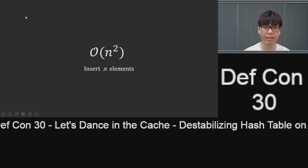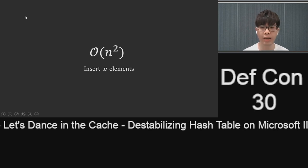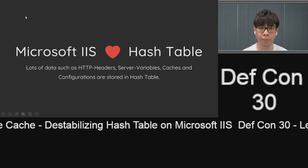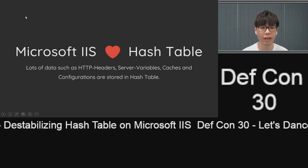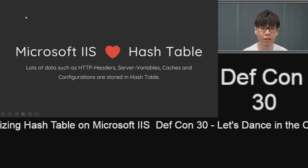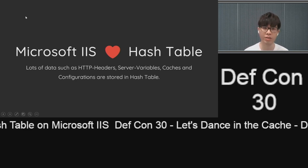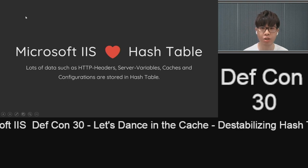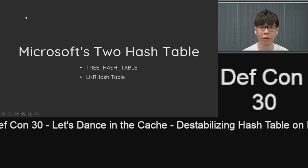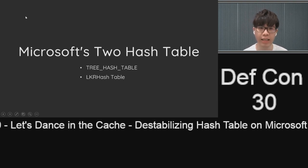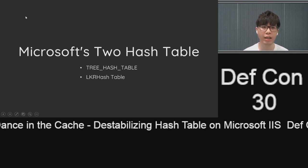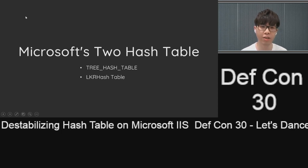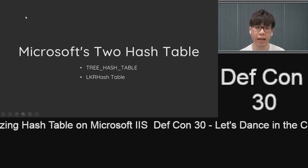With a good understanding of the hash table, let's discuss the relationship between the hash table and IIS. First, IIS loves hash tables. As a well-known and the only web server on Windows, IIS uses the hash table extensively in its architecture to store information such as HTTP headers, server variables, configuration, and cache. Due to the massive use of this data structure, Microsoft has designed its own hash table implementation from a very early stage. The following two are all the implementations used in IIS: one is called the tree hash table and the other is called the LKR hash table.